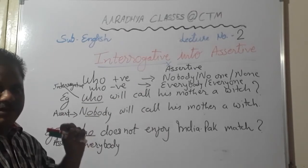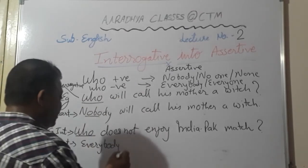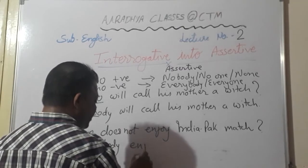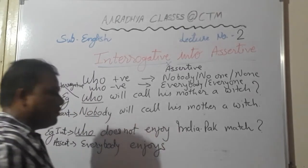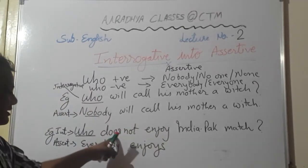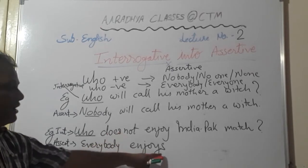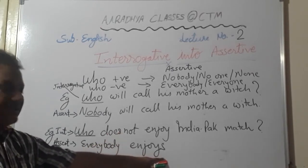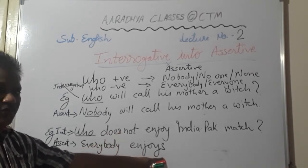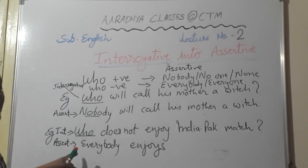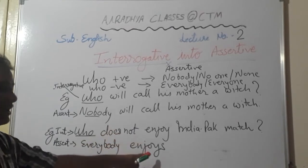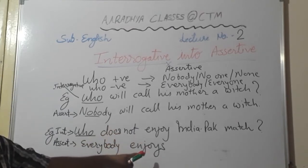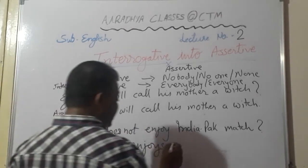I think this is very clear. So: who question positive → nobody; who question negative → everybody. Be careful — whenever 'does' is present, we add S/ES/IS to the verb. When you give the answer, 'does not' is removed but the verb takes S/ES/IS at the end. So 'everybody enjoys India-Pakistan match' — that is your assertive sentence.